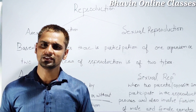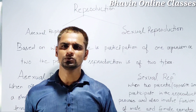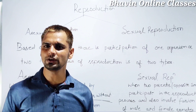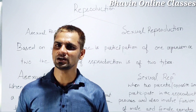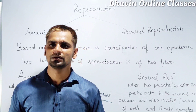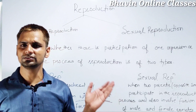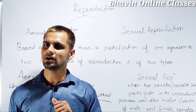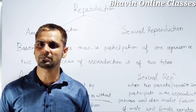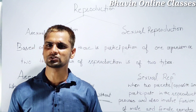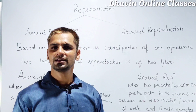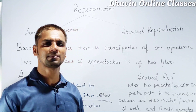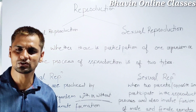In asexual reproduction, when the offspring is produced by a single parent with or without involvement of gamete formation, it is called asexual reproduction. While in sexual reproduction, when two parents of opposite sex participate in the process of reproduction and also involve fusion of male and female gametes, it is called sexual reproduction.